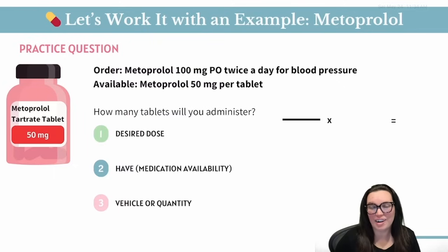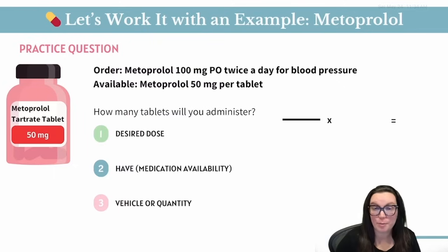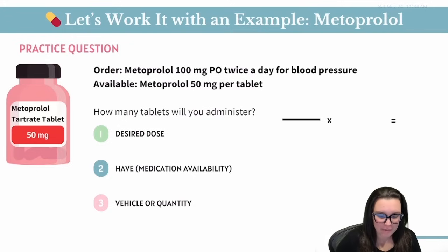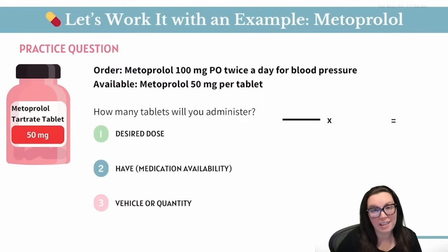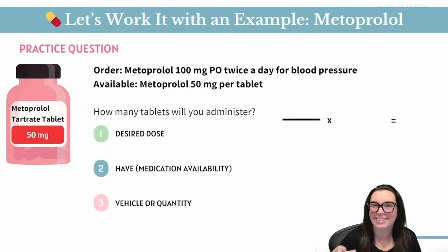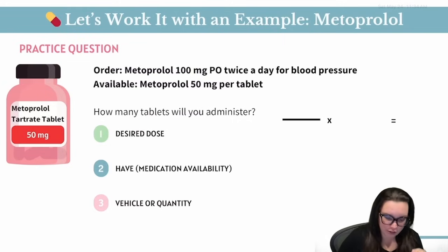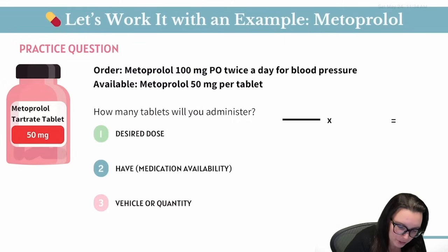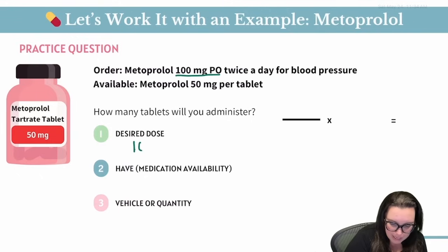Let's take a look at our first practice question. The order states that we need to provide metoprolol 100 milligrams PO twice daily for blood pressure, and it's available in metoprolol 50 milligrams per tablet. The first thing we want to look at is our desired dose — how much do we want to provide this individual? We want to give them 100 milligrams.